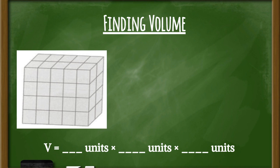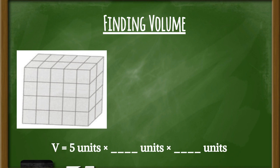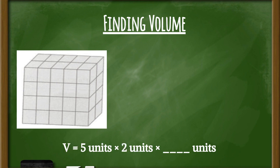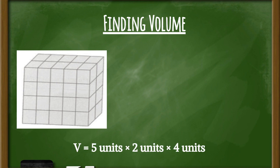Let's count the length first — count with me: one, two, three, four, five. We can fill in that blank: five units. Now let's count the width: one, two — there are two units that make up the width. Let's add that into our formula. Finally, let's count the height: one, two, three, four — four units make up the height. Now that we have our formula, solve for the volume on your whiteboards and wait for your teacher's signal.